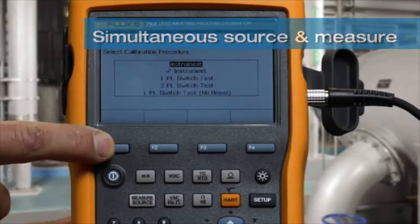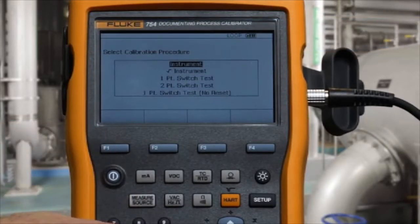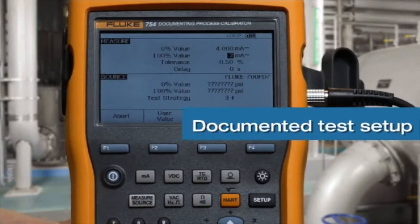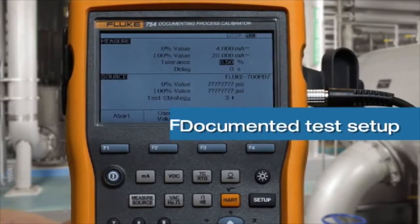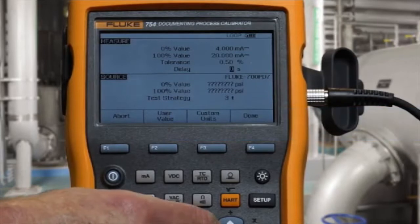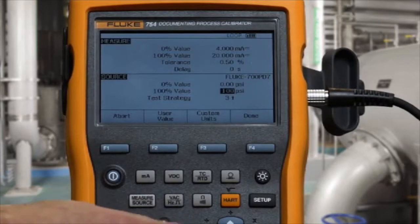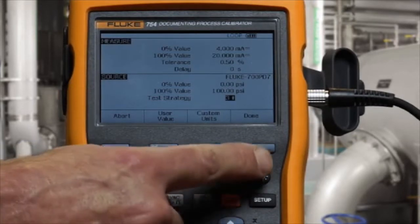Select as found for an instrument. We're going to measure 4 to 20 milliamps to a test tolerance of 0.5%, and we're going to source zero to 100 psi, and we're going to do a three-point test.